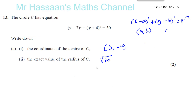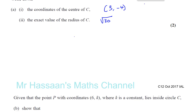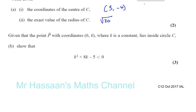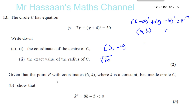Now part B: given that the point P with coordinates (6, K), where K is a constant, lies inside the circle, show that K² + 8K − 5 < 0. The center of the circle is at (3, −4). If point P lies inside the circle, then the distance between the center of the circle and P at (6, K) must be less than the radius.